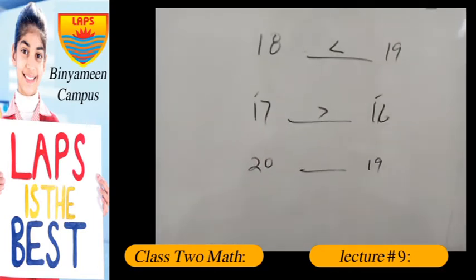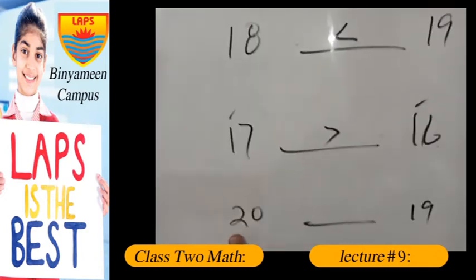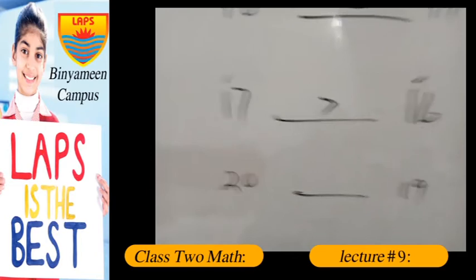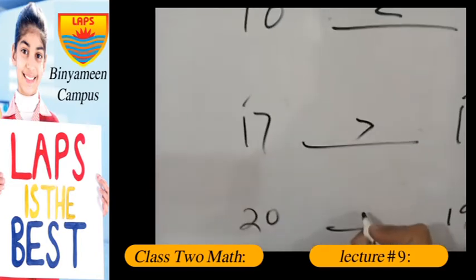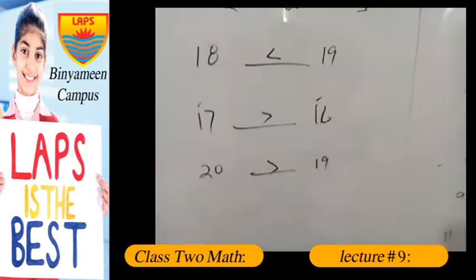Then here it has 20 and 19. And if we match, compare the values, the first value is 2 and the first value here is 1. So this value is greater than 19. That's how the first question will be solved.